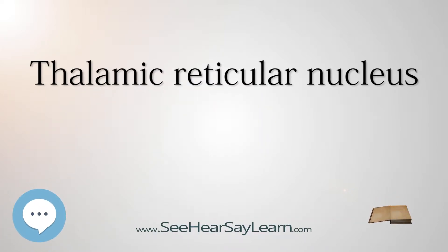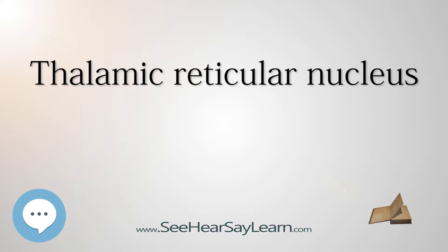The thalamic reticular nucleus is part of the ventral thalamus that forms a capsule around the thalamus laterally. However, recent evidence from mice and fish questions this statement and defines it as a dorsal thalamic structure. It is separated from the thalamus by the external medullary lamina. Reticular cells are GABAergic and have discoid dendritic arbors in the plane of the nucleus. The thalamic reticular nucleus is variously abbreviated TRN, RTN, NRT, and RT.